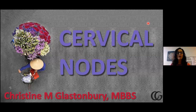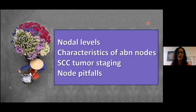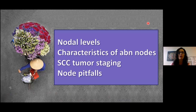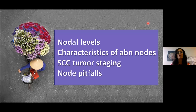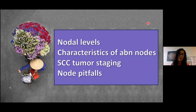This is a new lecture. I've lectured for a long time on neck nodes, and I think it's something that people feel is a stumbling block when they're doing neck imaging. So what I'm trying to do is find another way to talk about lymph nodes and take on a new perspective. I have disclosures. There are four areas we're going to talk about during the next 45 minutes: nodal levels, characteristics of abnormal lymph nodes, tumor staging for squamous cell carcinoma including AJCC and UICC, and finally some node pitfalls. There will also be Q&A.